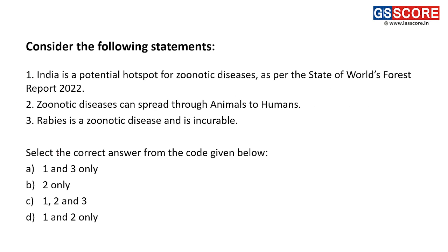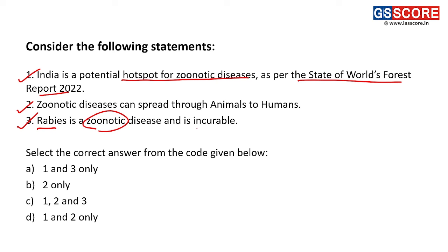Next question: consider the following statements. First, India is a potential hotspot for zoonotic diseases as per the State of World's Forests Report 2022 — this is correct. Second, zoonotic diseases spread from animals to humans with one intermediary species — correct. Third, rabies is a zoonotic disease and is incurable in nature — this is also correct. The answer is C: 1, 2, and 3.